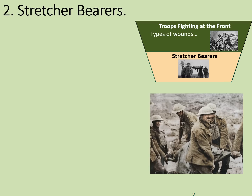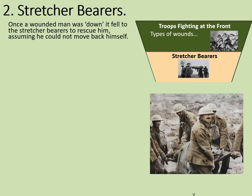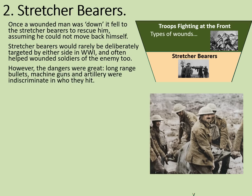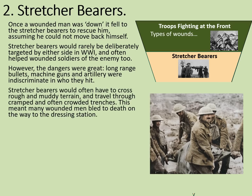The diagram is getting narrower, showing that this refers to smaller and smaller groups of wounded soldiers involved. Once a wounded man was down, it fell to the stretcher bearers to rescue them, assuming he could not move back himself. Stretcher bearers would rarely be deliberately targeted by either side, and often helped wounded soldiers of the enemy too. However, the dangers were great — long-range bullets, machine guns, and artillery were indiscriminate in who they hit. Stretcher bearers would often have to cross rough and muddy terrain and travel through cramped and often crowded trenches.